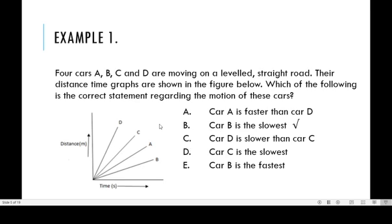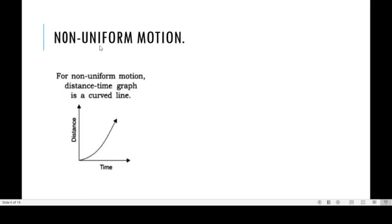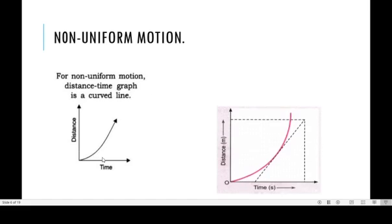Now going to non-uniform motion. The difference between a graph of uniform motion and non-uniform motion is that for uniform motion you have a straight line graph, but for non-uniform motion you have a curved line graph. This line is not straight. In terms of slope, everything is the same — the slope you get for a distance-time graph of non-uniform motion is still speed.